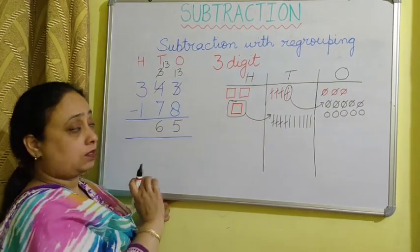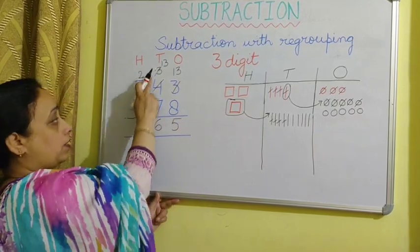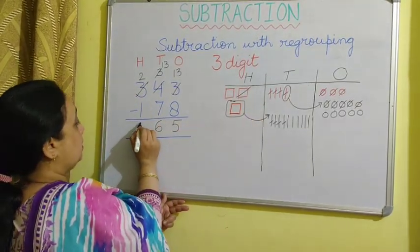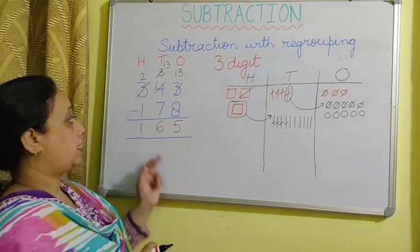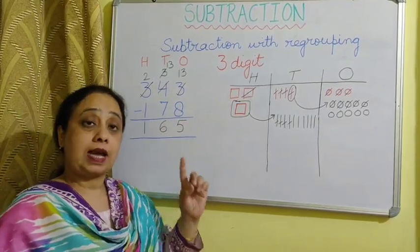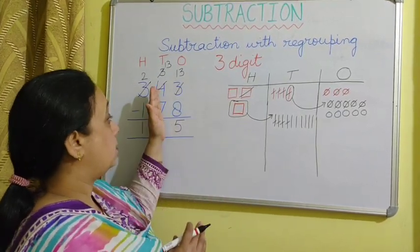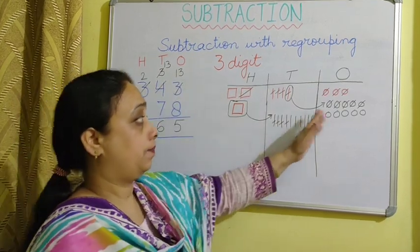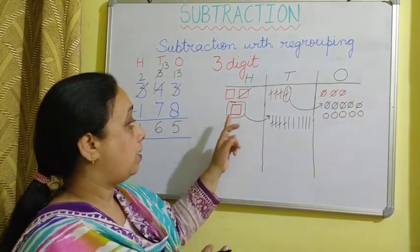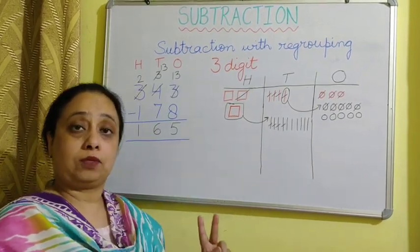Now I don't have 300 here — I have 200. From 200, I take away 100, and 1 hundred remains. So when I take away 178 from 343, the answer is 165. I did regrouping 2 times: first I regrouped 1 ten into 10 ones, and the second time I regrouped 100 into 10 tens.